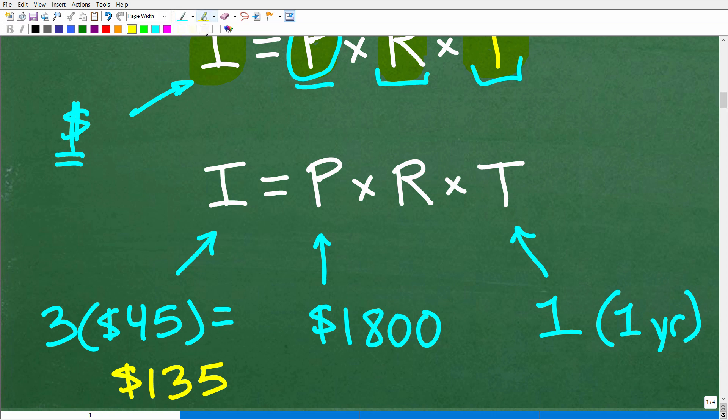So let's go ahead and kind of set this up now. So how much interest is going to be earned in one year? Well, if we earn $45 in four months, well, four times three is 12. So we just multiply that by three. We're going to earn $135 of interest. Now our principal amount is our starting amount, right? That's $1,800. That's what we're investing.